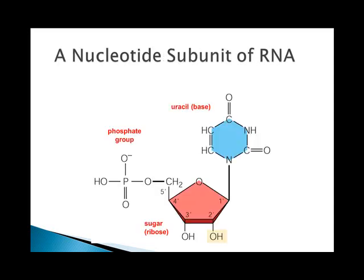RNA and DNA subunits look very similar. Their nucleotides look similar, except the sugar is ribose in RNA — it's deoxyribose in DNA. The base uracil only occurs in RNA and thymine only occurs in DNA, while cytosine, guanine, and adenine are the same for both types of nucleic acids. RNA is single-stranded, and DNA is double-stranded.